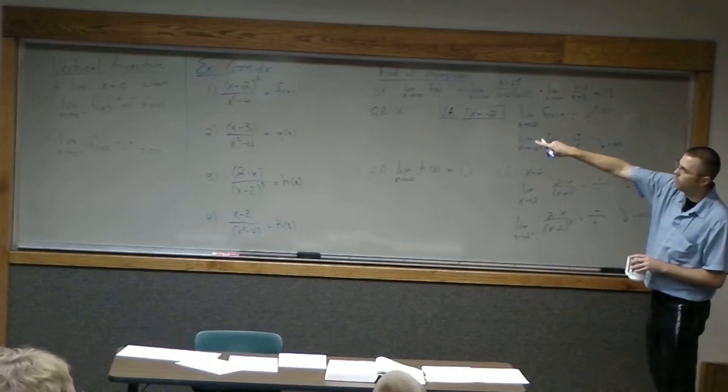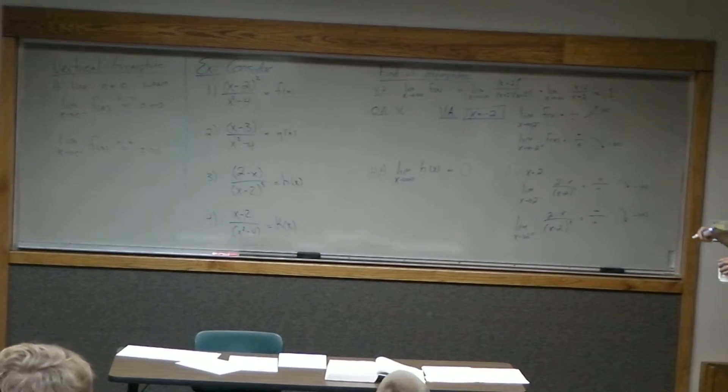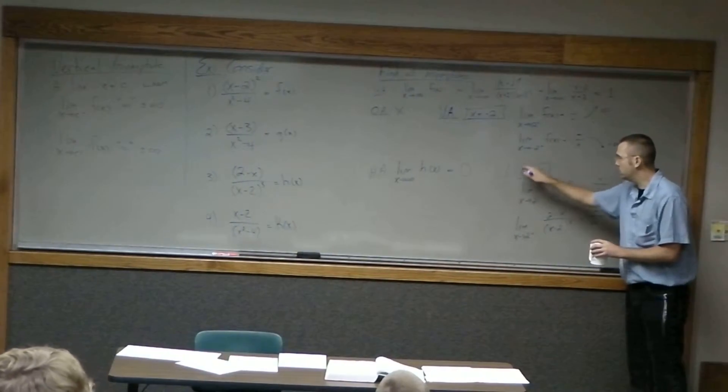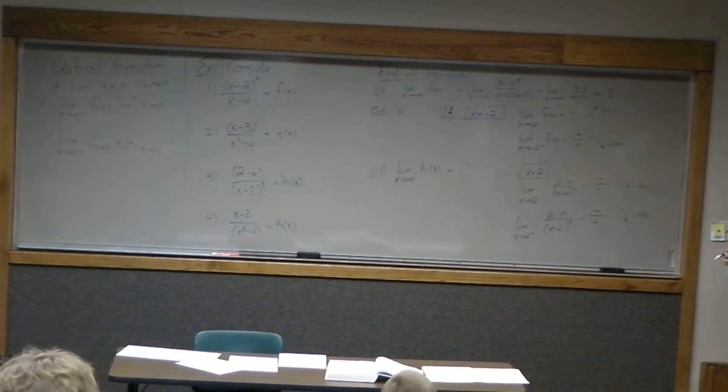Again, a property of our vertical asymptotes is that the values of our functions grow without bound either in the positive or negative directions, and so we see here that this is in fact a vertical asymptote as well. Alright?